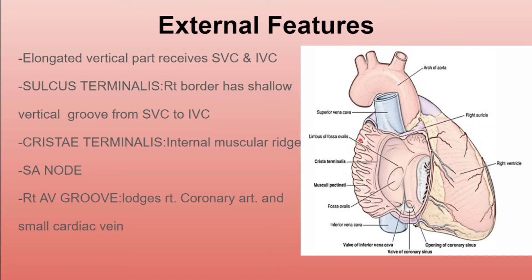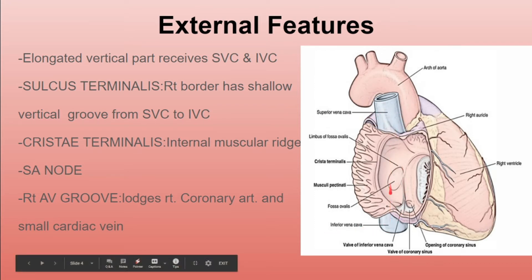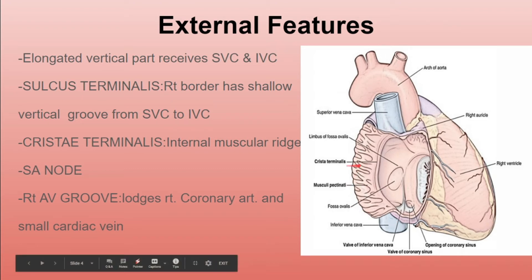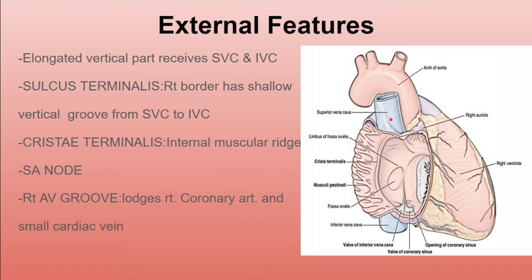Now the external features of the right atrium. The elongated vertical part receives the superior vena cava from the upper side and the inferior vena cava from the lower side. The sulcus terminalis is a shallow vertical groove on the right border that passes from the superior vena cava to the inferior vena cava. It is present on the outer surface, so it is not visible in the open-cut diagram shown.